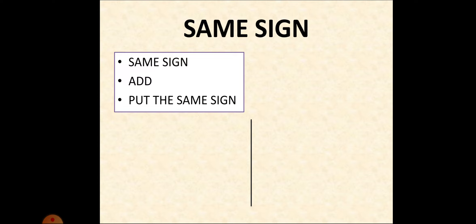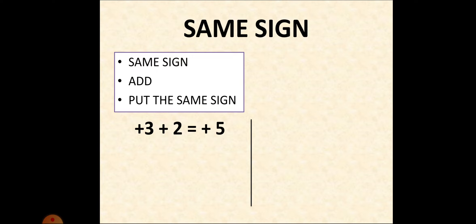Now the third rule: same sign. The rule says when integers are of the same sign, we have to add them. After adding, we put the same sign. So numerically, plus three plus two — both are of the same sign, so we add them. Adding the numerical part, three and two becomes five. After getting the result, we put the same sign. As both are positive, we put the plus sign.